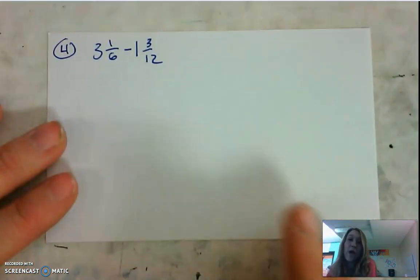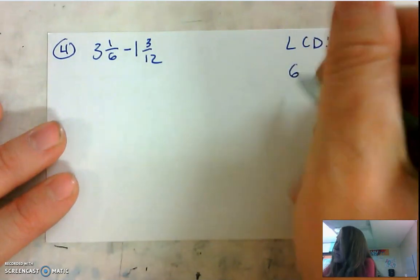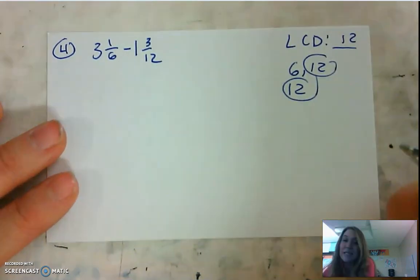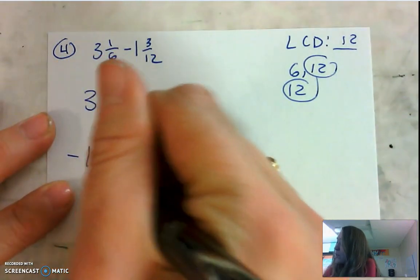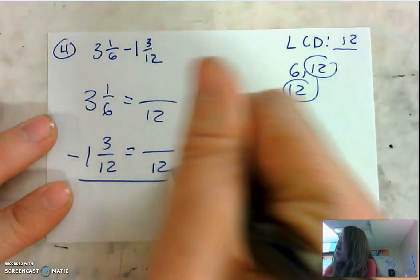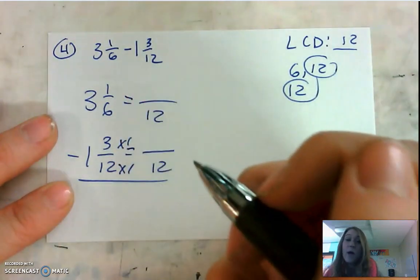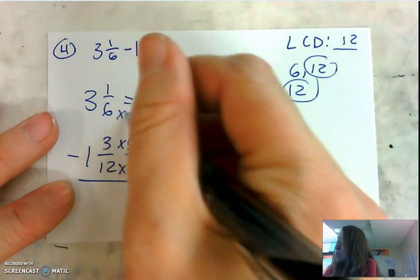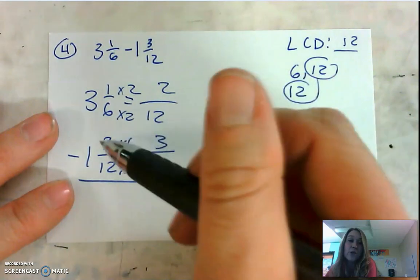Number 4 is another subtraction problem with mixed numbers, so we're going to find the LCD. We're finding the LCD of 6 and 12, so we say 6, 12 — stop. We found the LCD, easy peasy, it's 12. We're going to rewrite our fractions vertically, making sure that we are subtracting, and then create those equivalent fractions with a denominator of 12. To go from twelfths to twelfths, we multiply by 1 — what you do to the bottom, you do to the top — 3 times 1 is 3. To go from sixths to twelfths, we multiply by 2 — what you do to the bottom, you do to the top — 1 times 2 is 2.